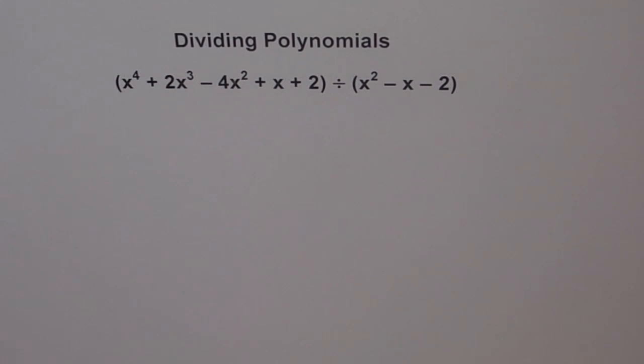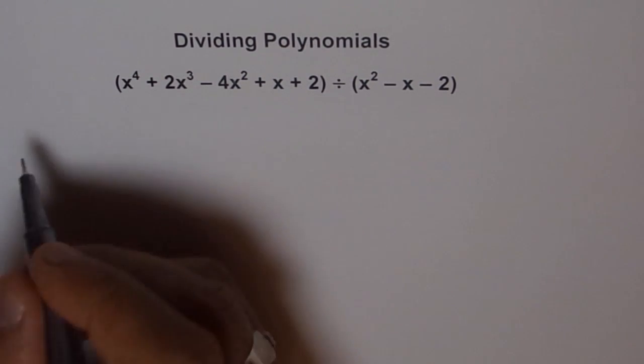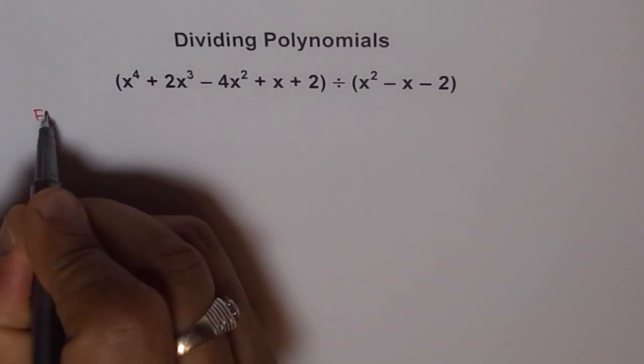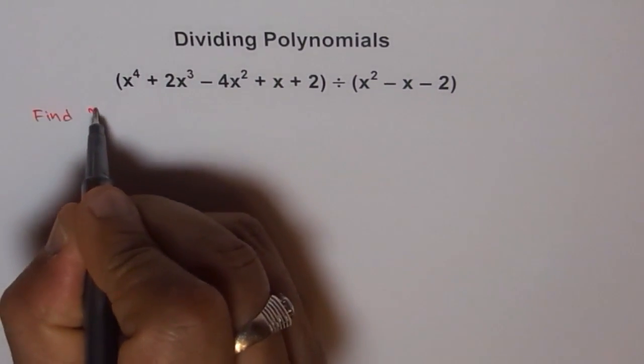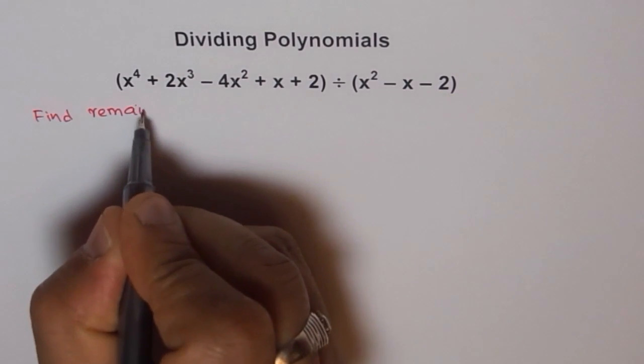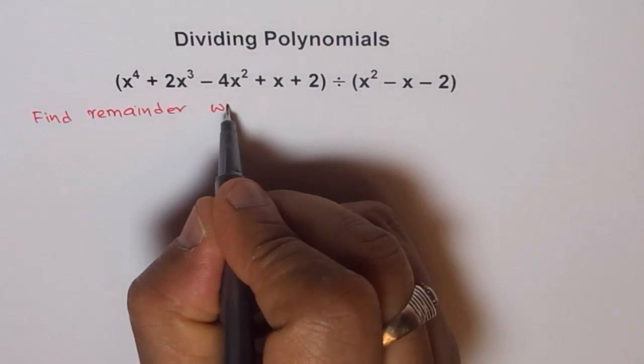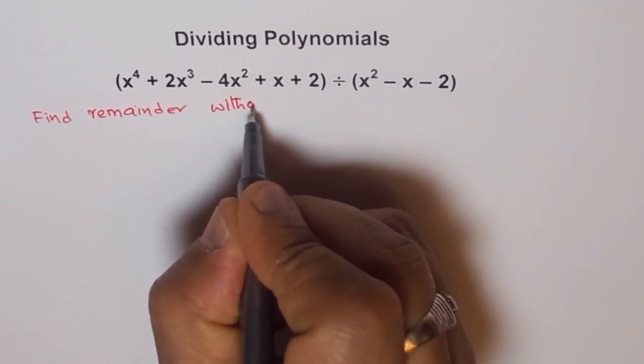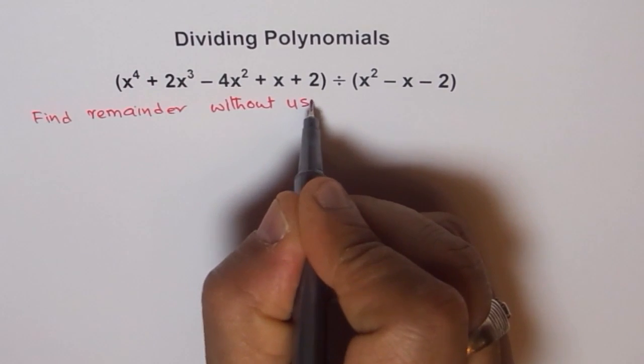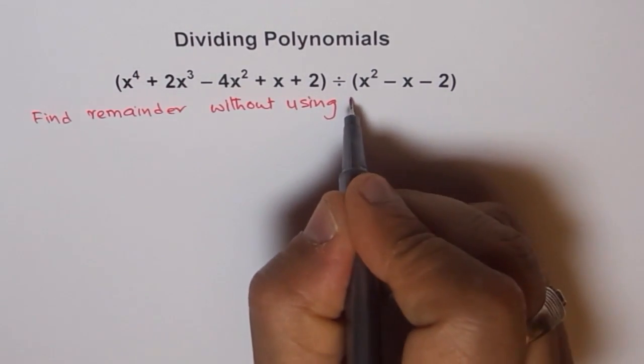We saw in the example long division gave us the answer. But now, if you are supposed to do without doing long division, how will you do it? So the question here is, find remainder without using long division.